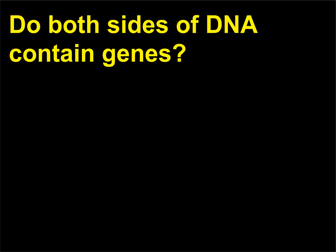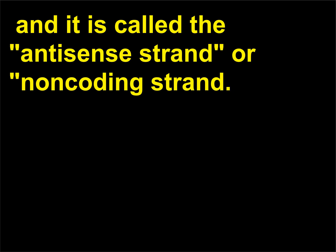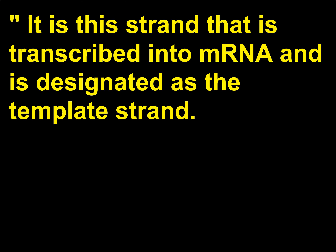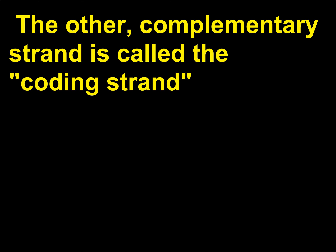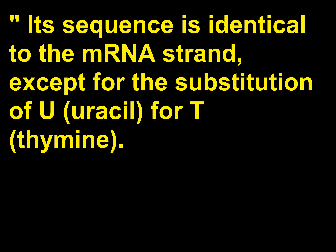Do both sides of DNA contain genes? One strand of DNA contains the information that codes for genes and is called the anti-sense strand or non-coding strand. It is the strand that is transcribed into mRNA and is designated as the template strand. The other, complementary strand is called the coding strand or sense strand because it contains codons. Its sequence is identical to the mRNA strand, except for the substitution of U (uracil) for T (thymine).